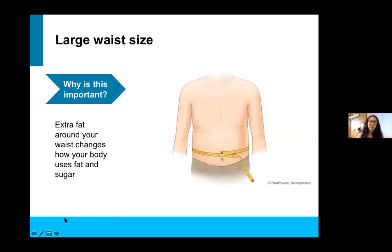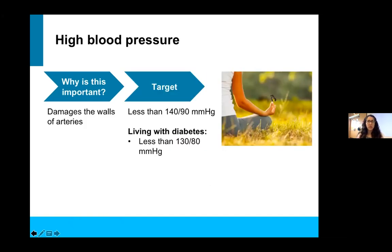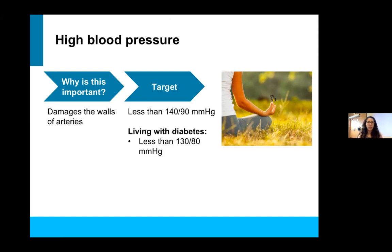What action steps can you take to manage your blood pressure? One common behavior is taking your medicine as prescribed for blood pressure — that's going to help keep you within target. Another behavior is to reduce the sodium in your diet, which can help lower blood pressure. Exercise can also bring down your blood pressure over time. During the moment of exercise, your blood pressure goes up a little bit and we expect that — it's only for the 30 to 40 minutes that you're exercising. Then after the exercise, after you've cooled down, even the next day, your blood pressure comes down a little bit lower.